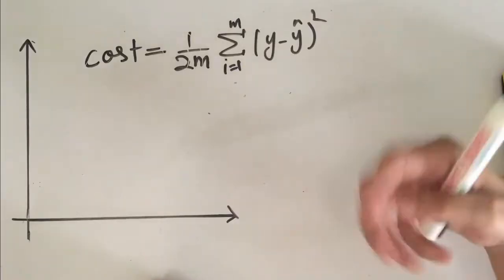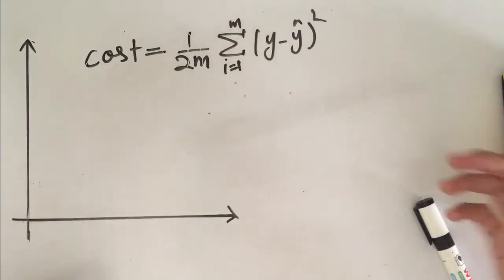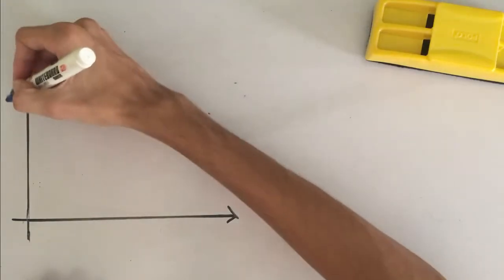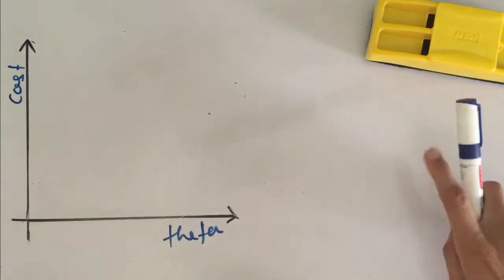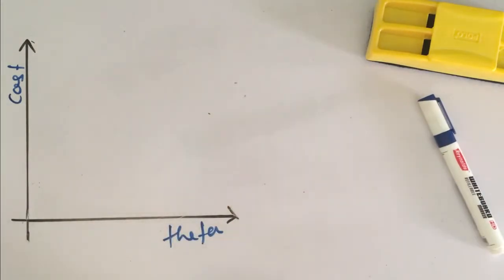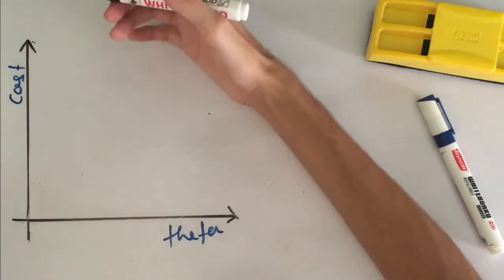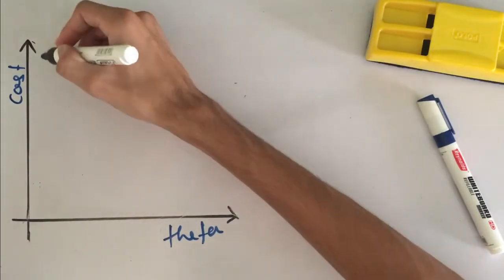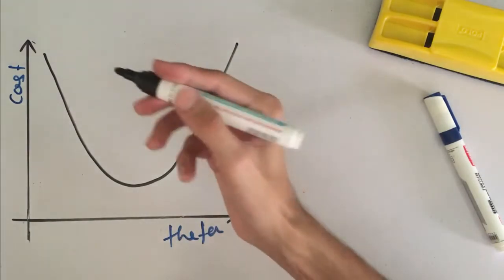The gradient descent algorithm is the algorithm we use to minimize the cost function value so that our straight line fits best to the data set. Let us say we are plotting cost versus theta. Here I'm taking only one of the many theta parameters — if the number of theta parameters increases, the dimension of the graph increases. For simplicity I'm only taking one theta parameter, and the graph for cost versus theta is going to look like a parabola.